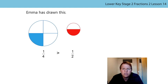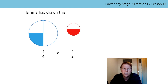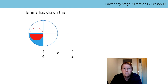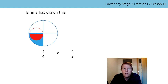Now Emma has drawn two diagrams. She's drawn a blue circle split into quarters and a red circle split in half. She thinks her diagram disproves what we just said — she thinks this shows that a quarter is greater than a half. Do you agree with Emma or disagree? I can see Emma's point because one quarter of the blue circle is bigger than one half of the red circle. But do you agree that a quarter is greater than a half? No — when we compare unit fractions, the greater the denominator, the smaller the fraction.